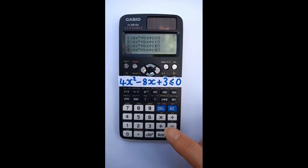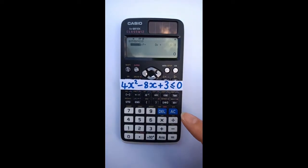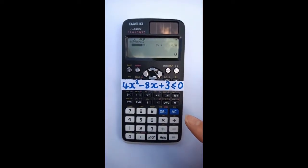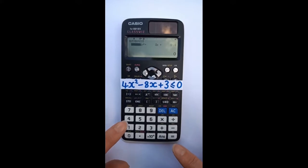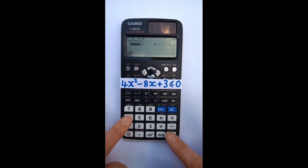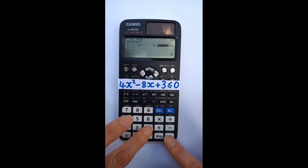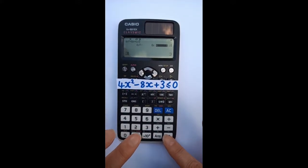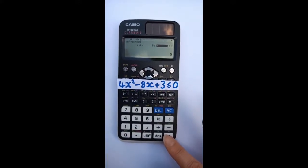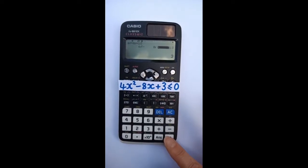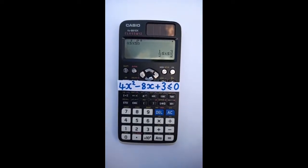Now choose which type of inequality you are dealing with — option 4 in this case, less than or equal to. Type in the coefficients of your inequality: negative 8 equals, 3 equals. When you next press equals, the calculator will reveal the solution. And that's it.